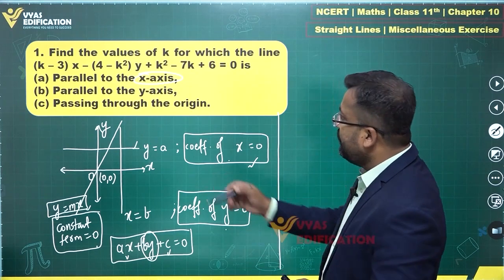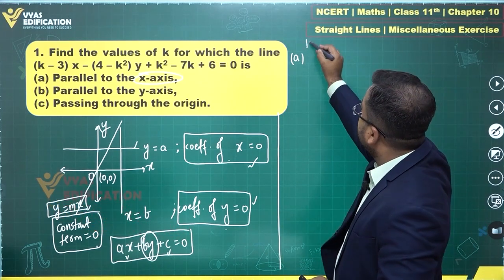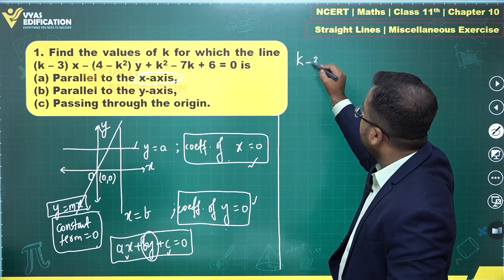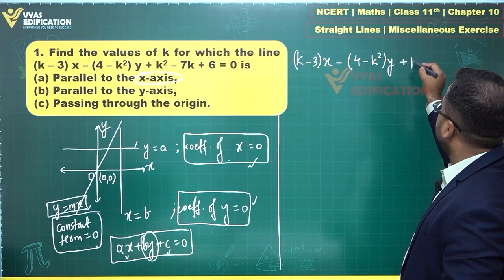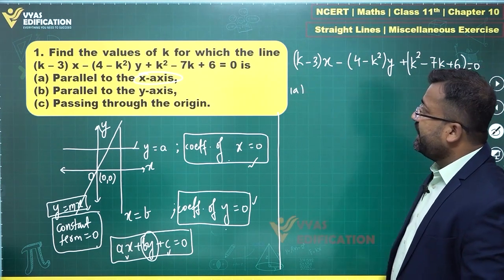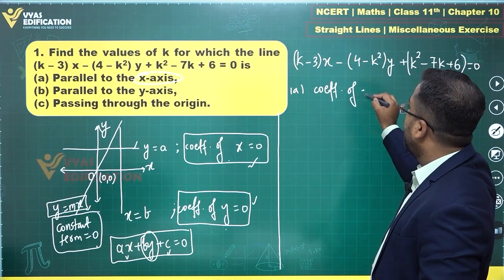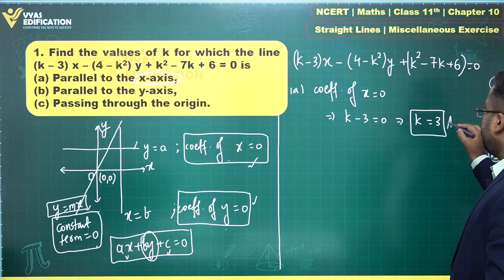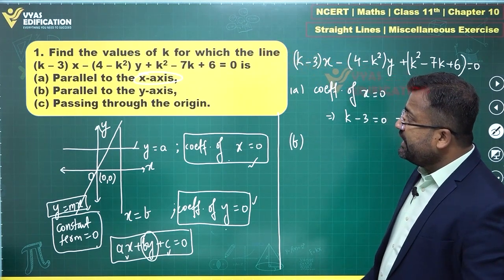Let's apply these conditions. The equation of the line is: (k − 3)x − (4 − k²)y + (k² − 7k + 6) = 0. For part (a), line parallel to the x-axis — coefficient of x = 0, so k − 3 = 0, which gives k = 3. That's the answer for part (a).